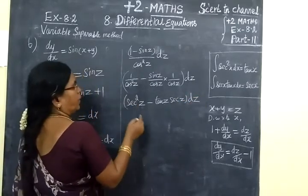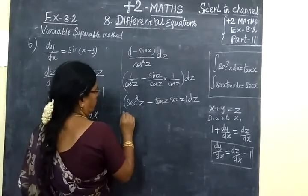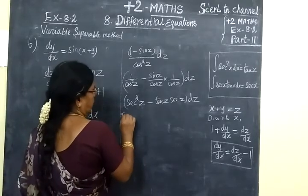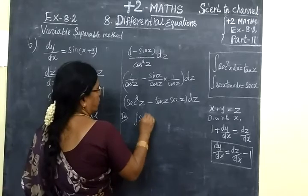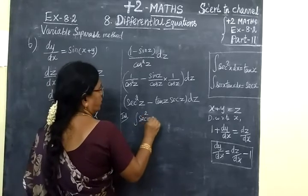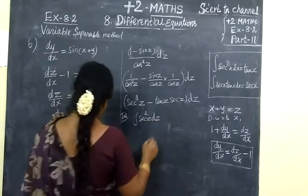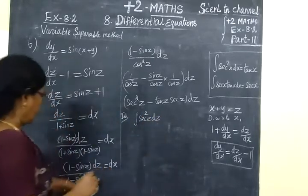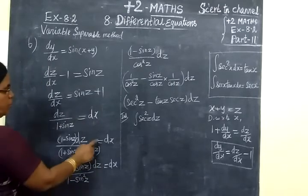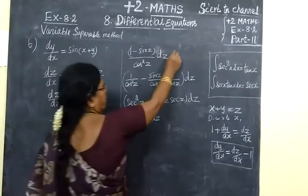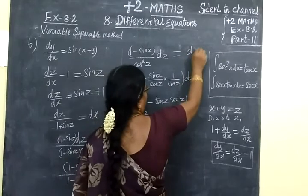Now taking the integral on both sides. Integral of sec squared z dz minus integral of sec z tan z dz equal to integral dx.